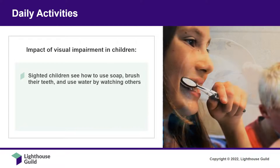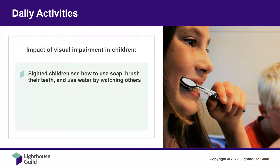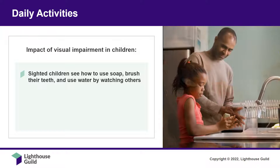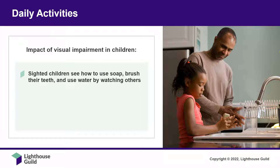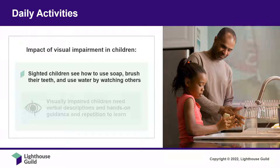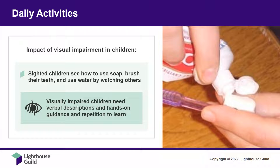Similarly, think of how young children learn to wash their hands or brush their teeth. They see how to use soap, hold and put paste on the toothbrush, and turn the water on and off by watching parents or older siblings. Children with visual impairment, however, need verbal descriptions to understand how the toothbrush is used. They may need hands-on guidance and repetition on how to operate water faucets, or how to put toothpaste on the brush using their fingers as a guide.